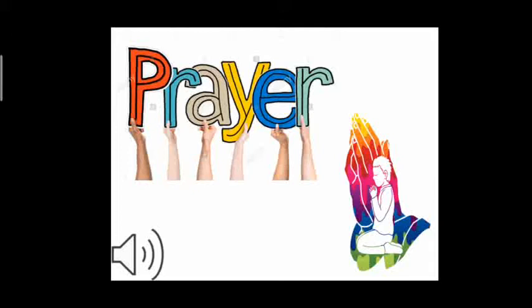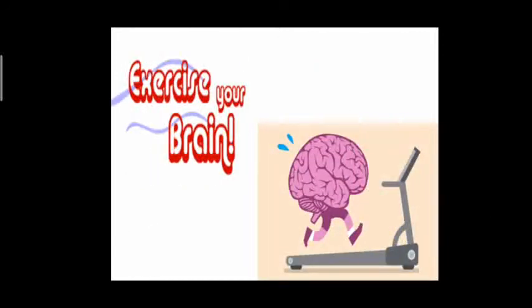Ok children, open your eyes gently. Let's do one energizer. If I say 2D shapes, you have to roll your hands in a forward movement. If I say 3D shapes, roll your hands in a backward movement. Circle, Sphere, Cube, Square, Triangle, Cuboid, Rectangle, Circle, Cube, Cone, Cuboid, Square, Circle, Sphere, Cylinder, Circle. Ok children, superb.